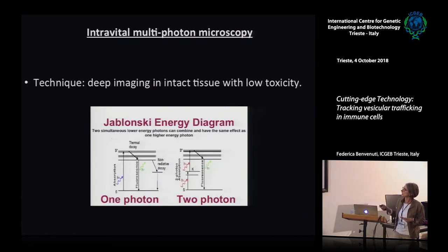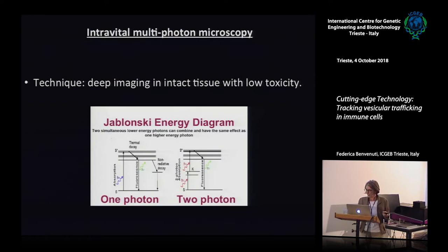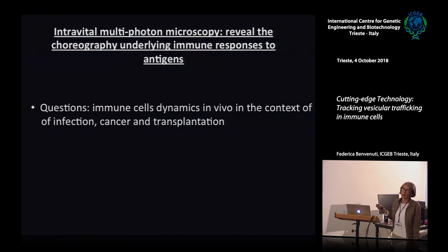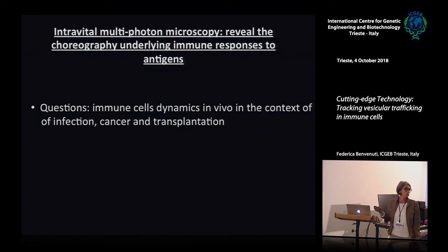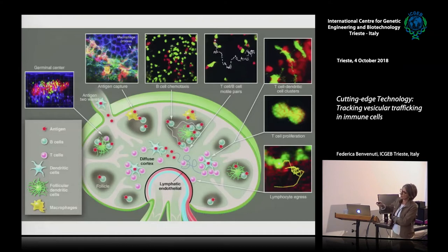Two-photon microscopy is a technique that allows imaging deep in tissues with very low toxicity. This is what made it possible to expose a lymph node and analyze what's going on within the lymph node capsule. Intravital multi-photon microscopy has revealed the choreography of the immune reaction and of immune responses to antigens. Different sorts of questions have been asked and answered, in part, on the dynamics of interactions among immune cells, what happens during infection, and how a cancer cell is rejected by cytotoxic lymphocytes or what happens during rejection of a transplant.